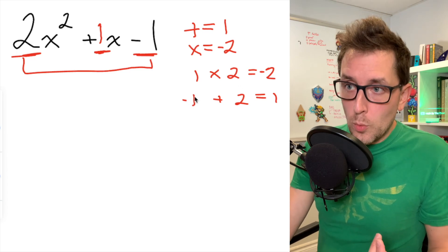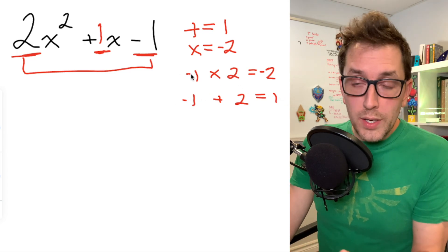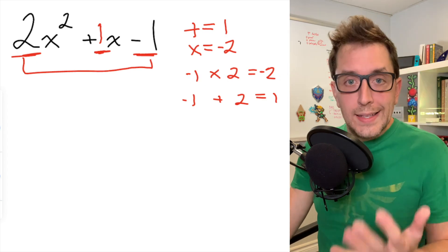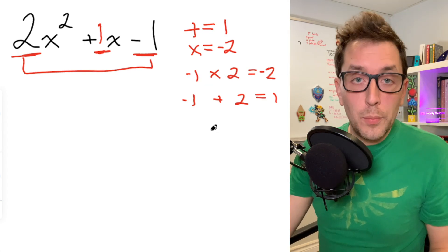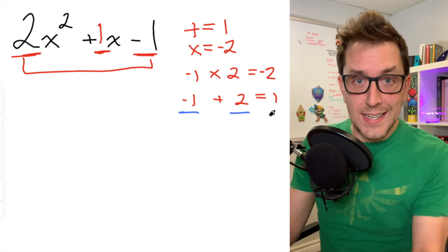So that leaves me with 1. If I make 1 negative and I add 2, I do in fact get 1. And if I make 1 negative up here and I multiply by 2, I get -2. So my two numbers have to be -1 and positive 2. Those are the numbers that are going to satisfy my two conditions.